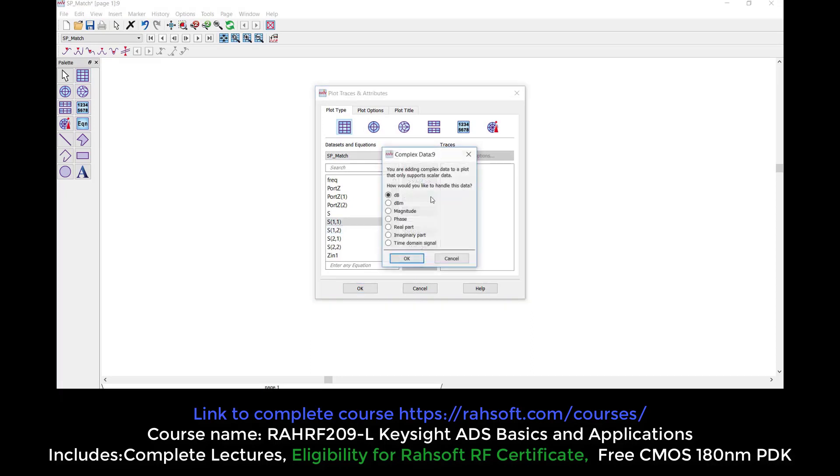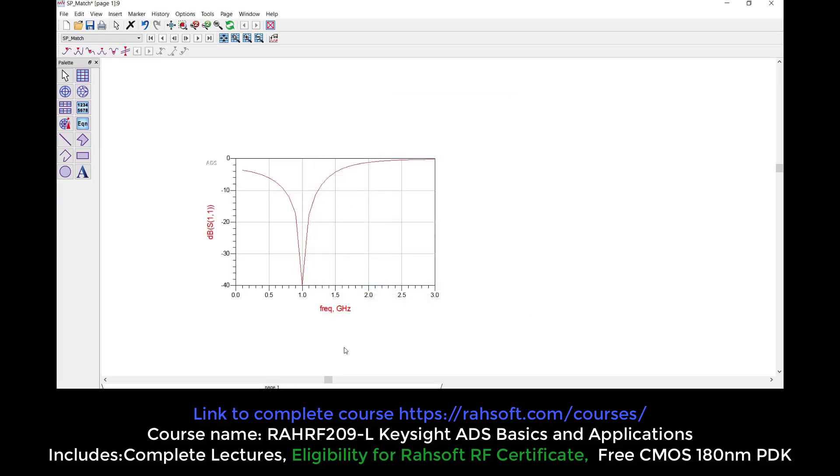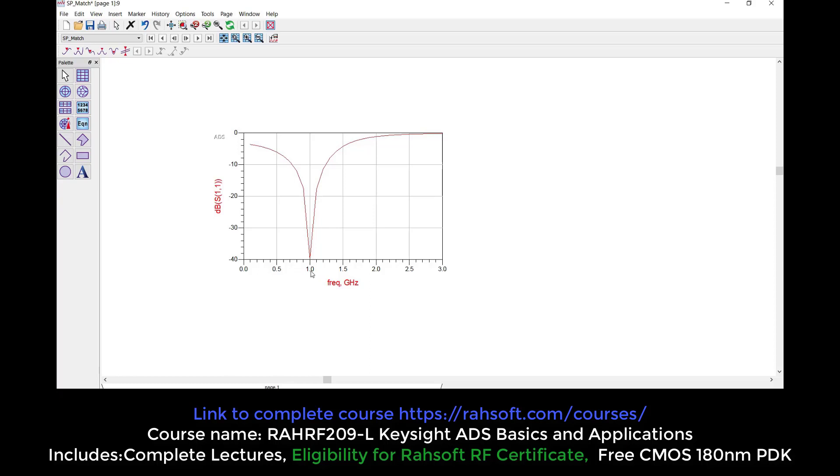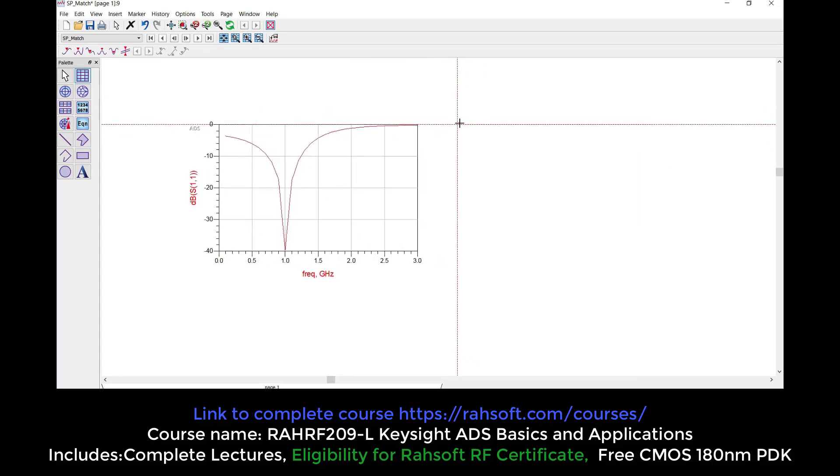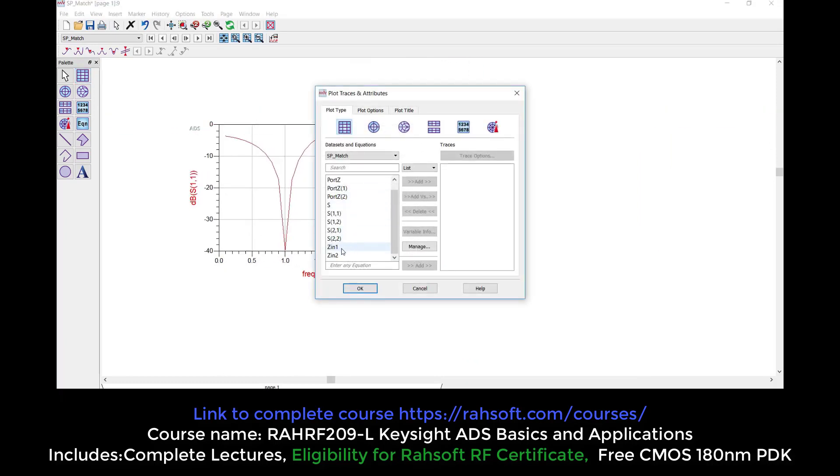Let's measure the parameters. I'm going to start with S11 in dB. As you see, this shows the matching at 1 gigahertz. This is a single frequency matching and it's very good matching. As you see, it's minus 40 S11.